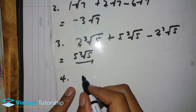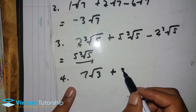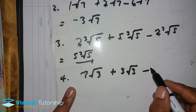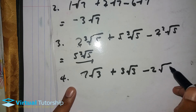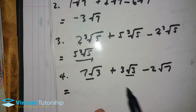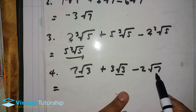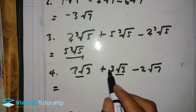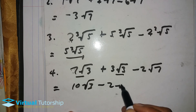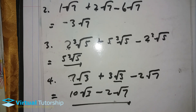Let's say 7√3 plus 3√3 minus 2√7. The first two terms are like terms because they share a common root, √3. But the last term is different — it has √7. So we only add the first two: 7 plus 3 is 10√3, and we leave minus 2√7. The answer is 10√3 minus 2√7. That's how you add and subtract surds. Thanks for watching, stay tuned for more, bye!